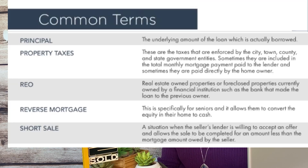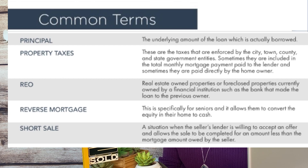Real Estate Owned (REO): Foreclosed properties that are currently owned by financial institutions such as a bank that made the loan to the previous owner. Reverse Mortgage: This is specifically for seniors and allows them to convert the equity in their home to cash.